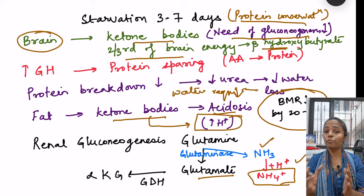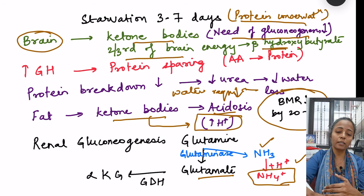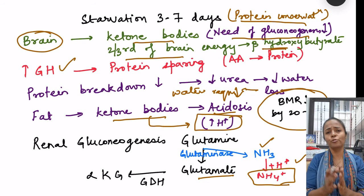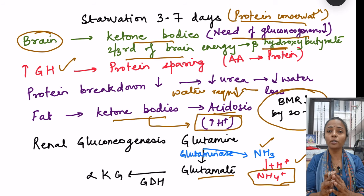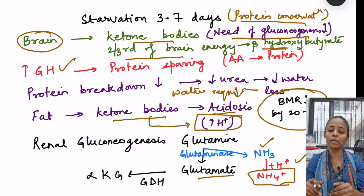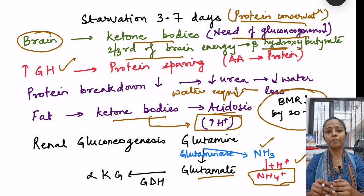One more hormone comes into play now: growth hormone. Growth hormone has a protein-sparing action — when metabolic end products like amino acids are released, growth hormone increases and promotes protein synthesis, thereby sparing protein. So the hormone sequence in fasting is: initially epinephrine and glucagon; then glucagon and glucocorticoids; and finally growth hormone is added.